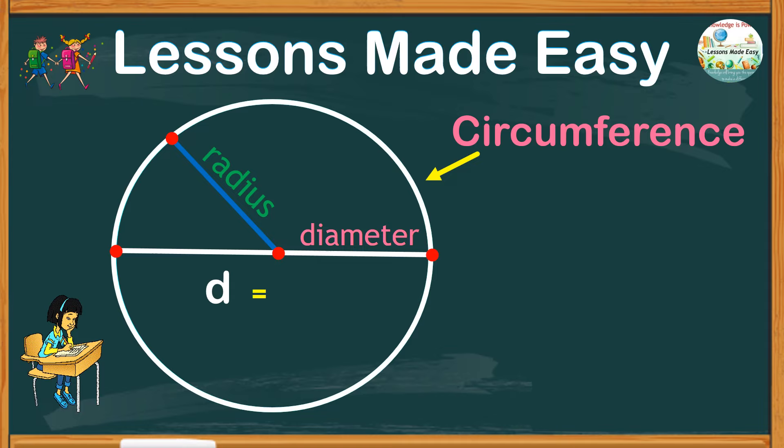The diameter is twice or two times the radius. If the radius is 4 meters, double this number means the diameter is 8 meters. Therefore, the radius is only half of the diameter.